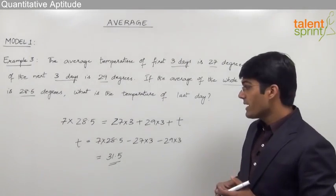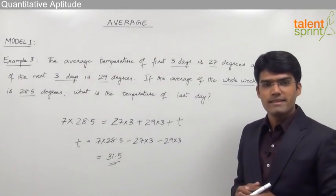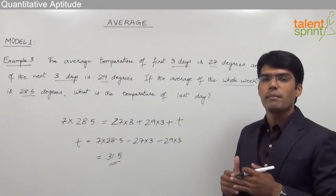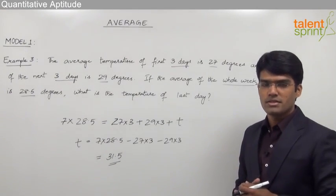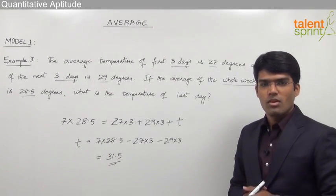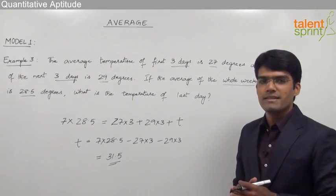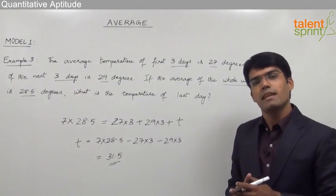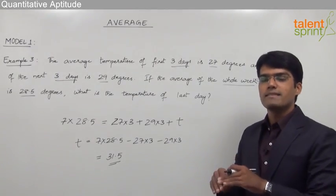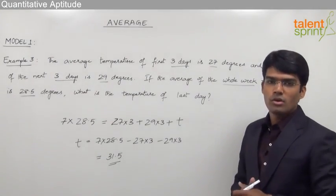So friends, as you can see in this example, the temperature of one of the days can be calculated simply by balancing the sum of all the temperatures on both the sides. Or we can say that the value of any of the elements from the given set can be calculated simply by balancing the total of all the values on both the sides.